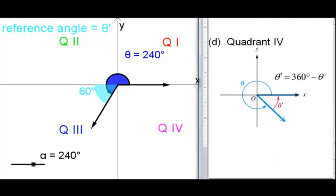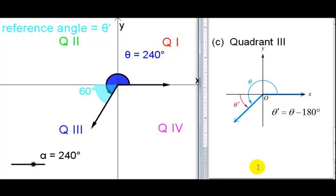Here is the formula for finding the reference angle in quadrant 3: to find this angle it's the whole angle minus 180.